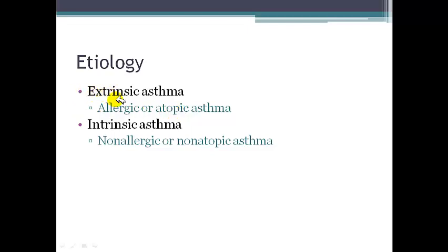In individuals with extrinsic asthma, the presentation is usually in childhood. You could see a positive family history of such diseases or at least such symptoms. The individual himself or herself might be suffering from other allergies — like, for example, atopic dermatitis, which is eczema — besides asthma, and other allergic manifestations are also possible.